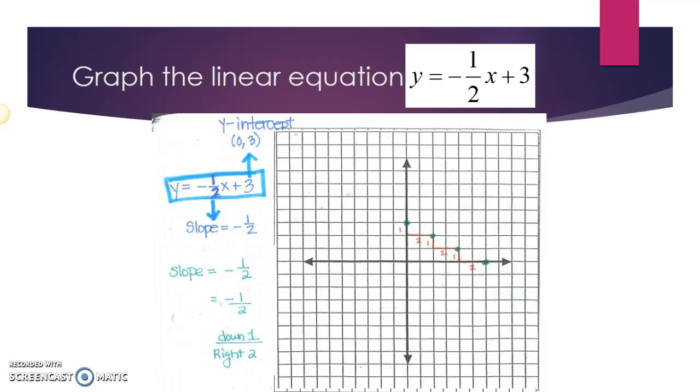But I can still plot more points in the other direction. Notice how I'm only going down and right. Well, what about the left side of the graph?